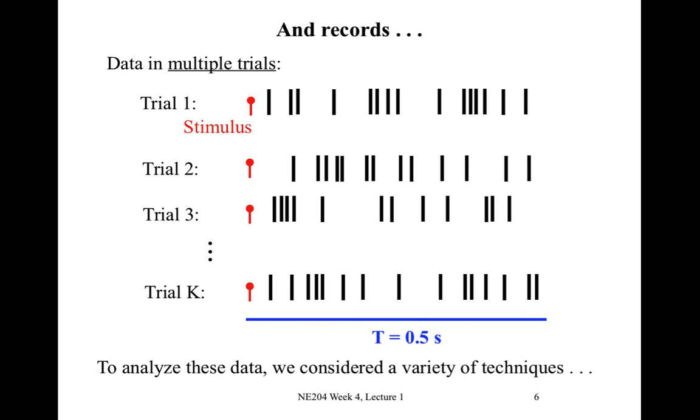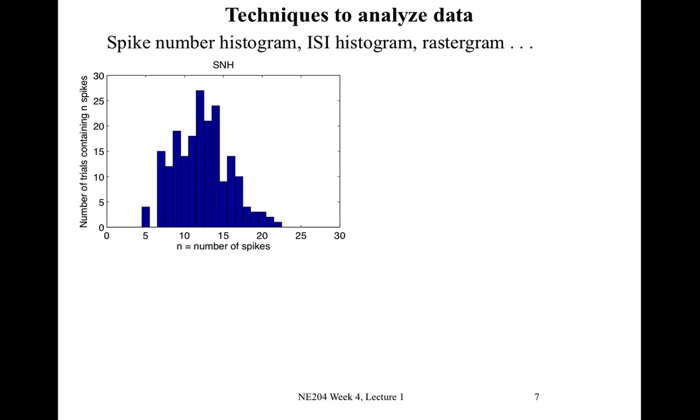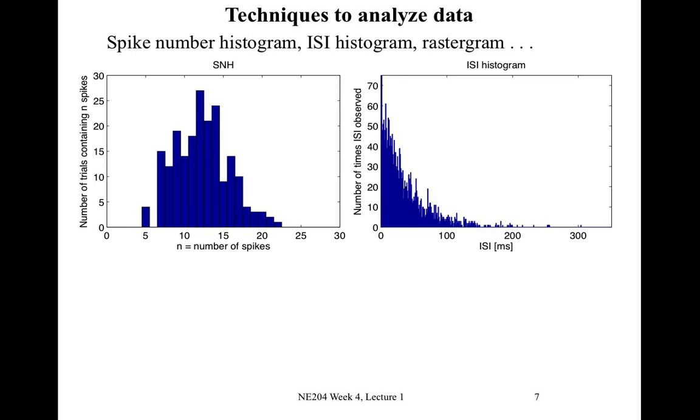And we looked at a variety of techniques to analyze the spike train data we observe. And these included methods of characterizing the data like the spike number histogram, the ISI histogram, and the rastogram. And we did this in lab last week, and you'll be doing this in your assignment that's due this week. Looking at the spike number histogram, for example, notice the axes here. We have the thing that we observed, the number of spikes, and then the number of times or number of trials we see those spikes on the vertical axis.